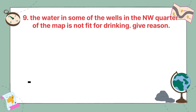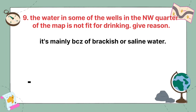The water in some of the wells in the north-west quarter of the map is not fit for drinking. Give a reason. It is mainly because of brackish or saline water.